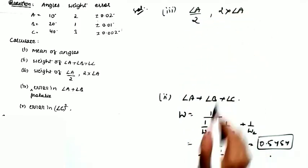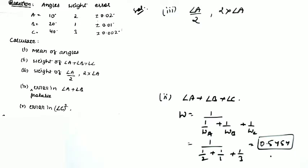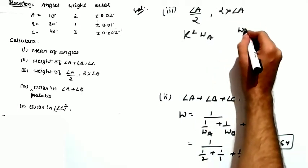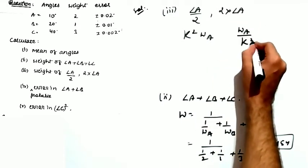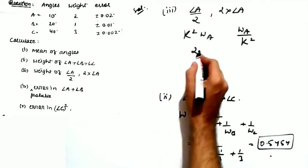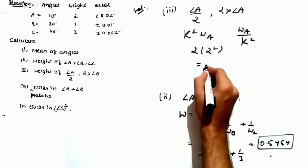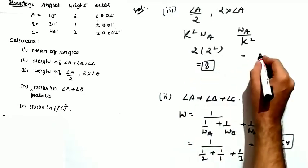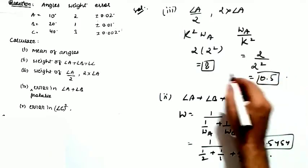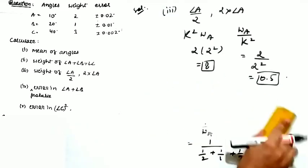When you divide a quantity by a constant k, the weight becomes weight of A divided by k². In this case, for 2 times angle A, the weight of A is 2, multiplied by 2² = 4 gives 8. For division by k, the weight reduces, and for multiplication by k, the weight multiplies by k²; in this particular case it comes to 0.5.